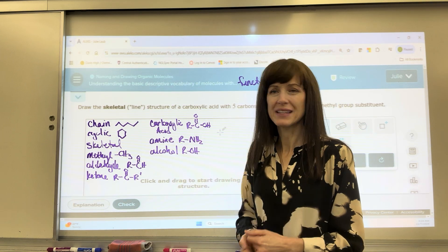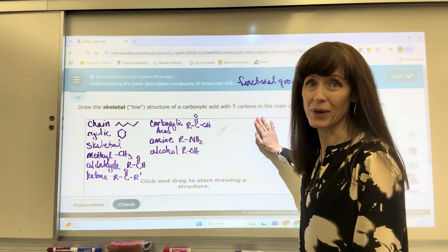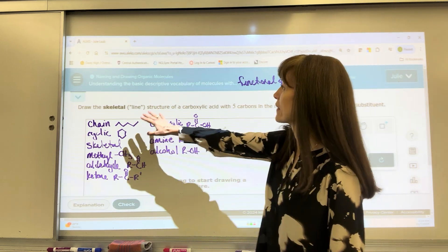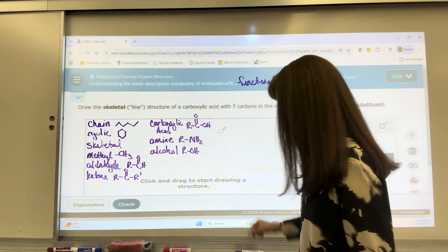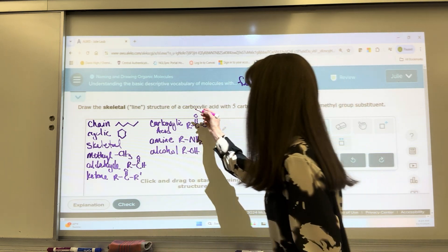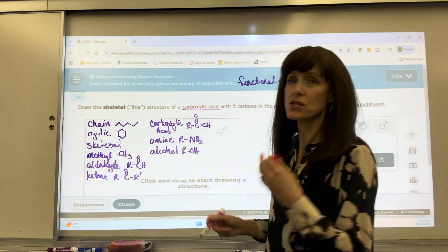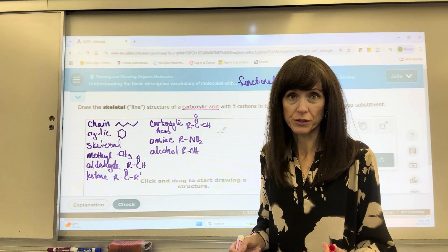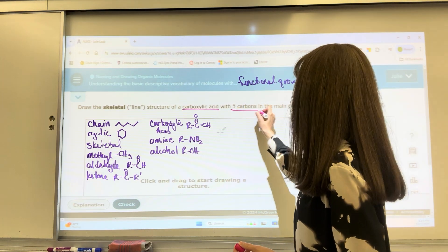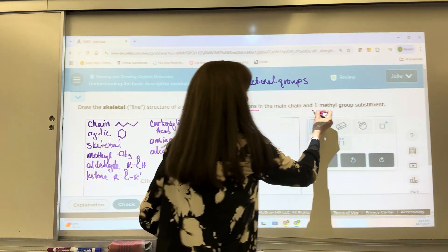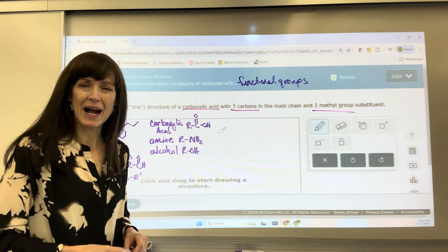So we're going to do several of these. Let's look at this particular question, this first question. It says, draw the skeletal, so the line structure, of a carboxylic acid. Okay, I'm going to highlight that. On this topic, they're going to give you a functional group with five carbons on the main chain and one methyl group. This has quite a bit happening.